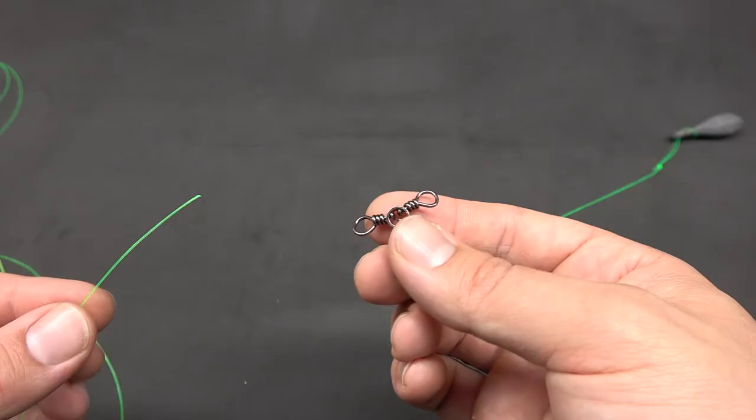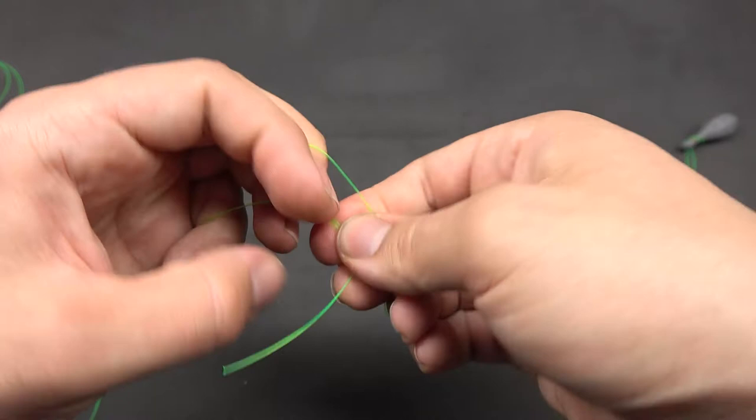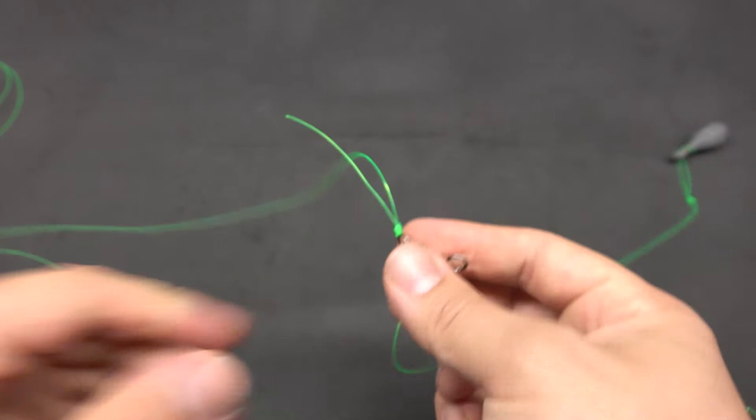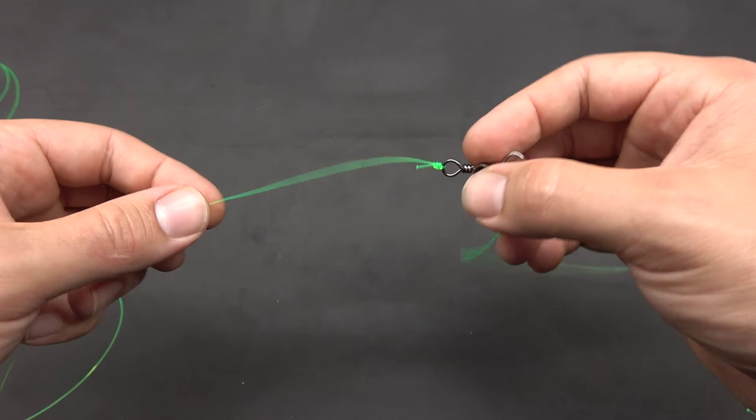We're going to take another piece of leader material and attach it to one of these other eyes. Now, this section has to be relatively long. Three to five feet is a good starting point. You can adjust and see what works best for you. So we're going to pull a few feet of line.